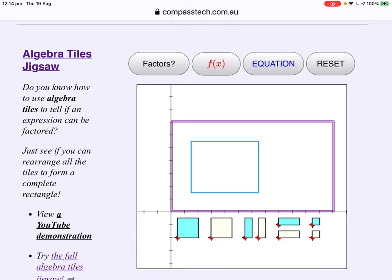So, the Algebra Tiles jigsaw, quite simply, creates a rectangle. Did you know how to use Algebra Tiles to tell if an expression can be factored? Well, you just see if all the pieces will fill a rectangle.